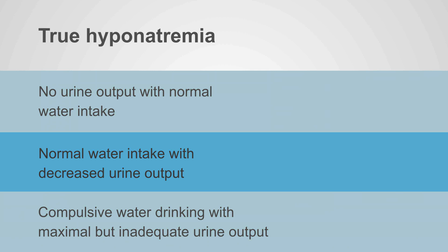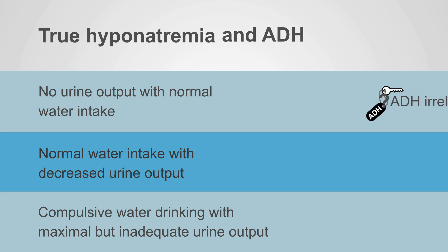Let's look at these categories in regards to ADH activity. The first is patients with no urine output and normal water intake. In this situation, ADH is irrelevant — these are people with no or little urine output, and whether that urine is concentrated or dilute makes no difference at all.